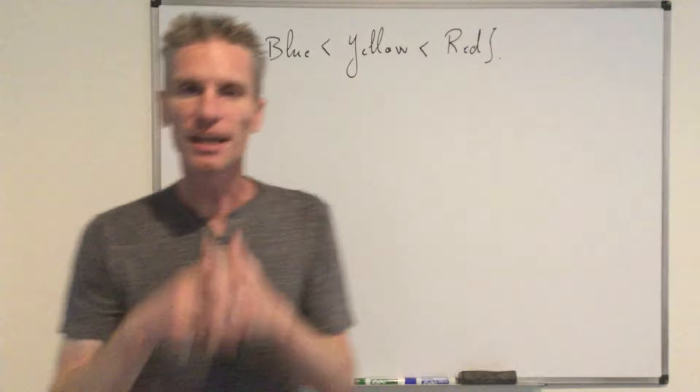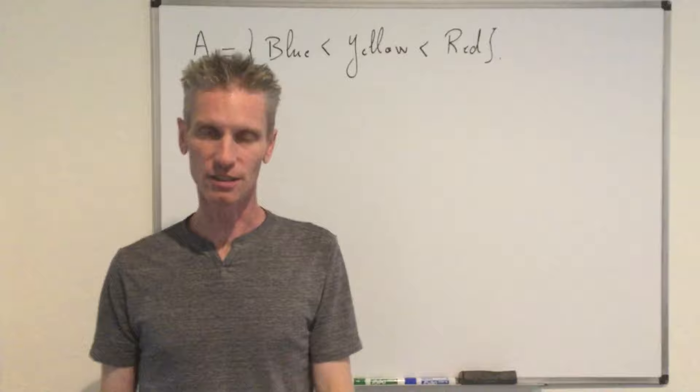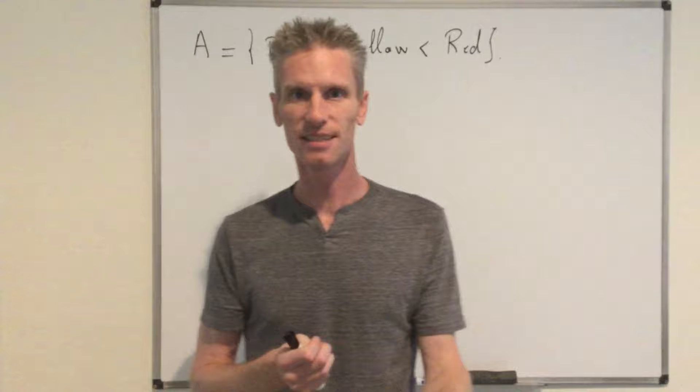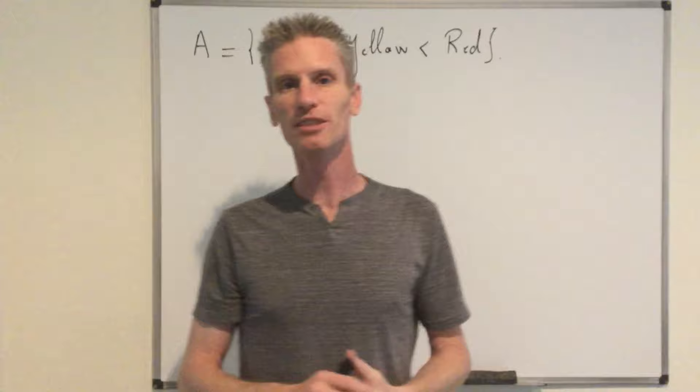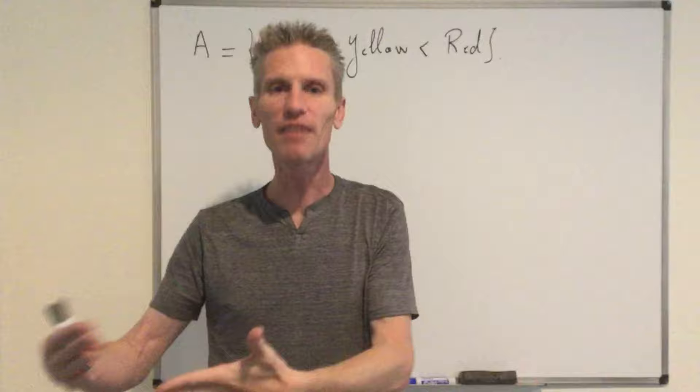A natural observation is that on event A, we have a specific ordering of the three values of the dice. So clearly, if two of the three dice at least land on the same value, then this is not possible. If at least two of the dice land on the same value, then there is no strict ordering.